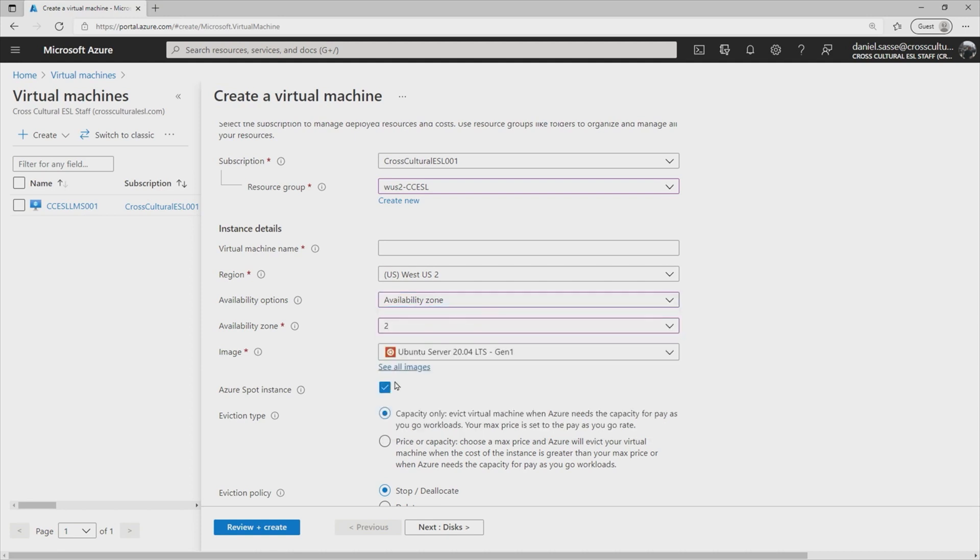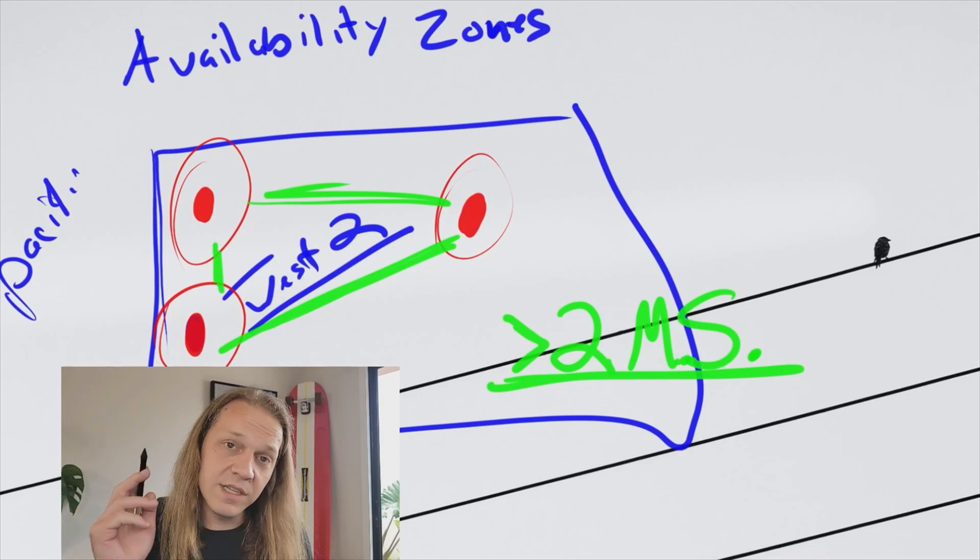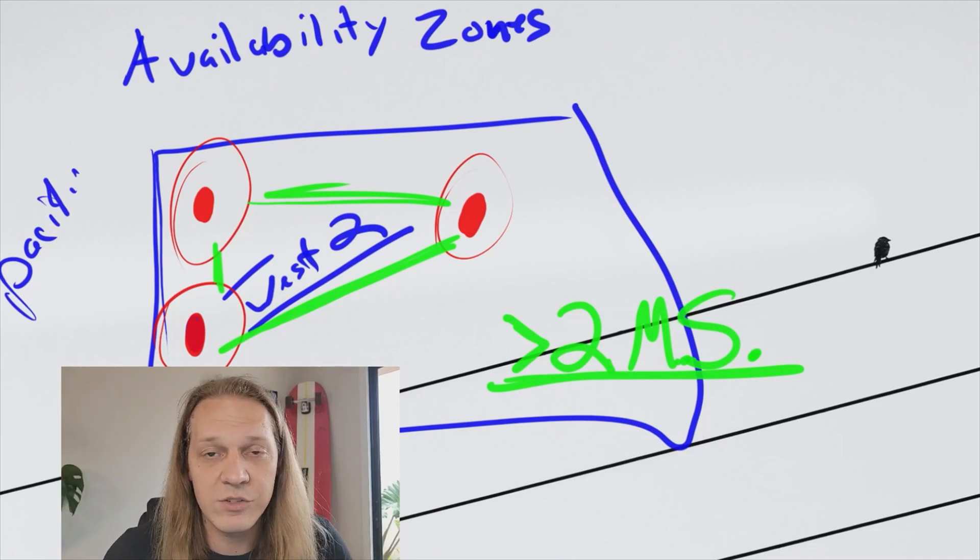And this availability zone, again, is representing each of the data centers that we've got in our region, like we remember illustrating here in Washington.